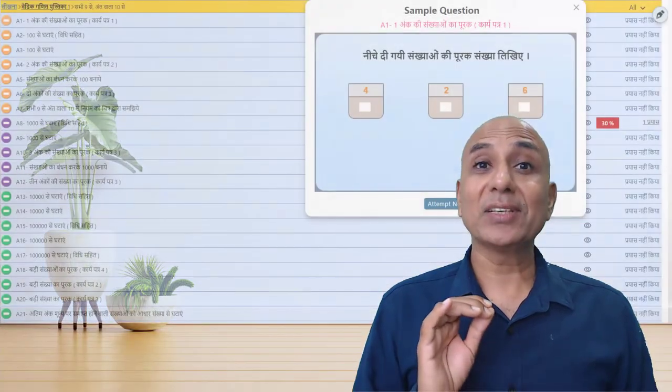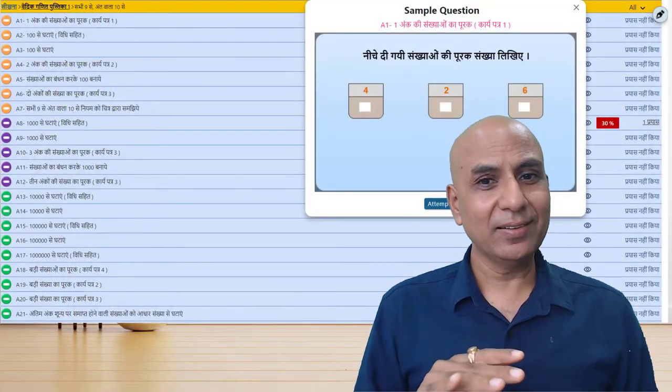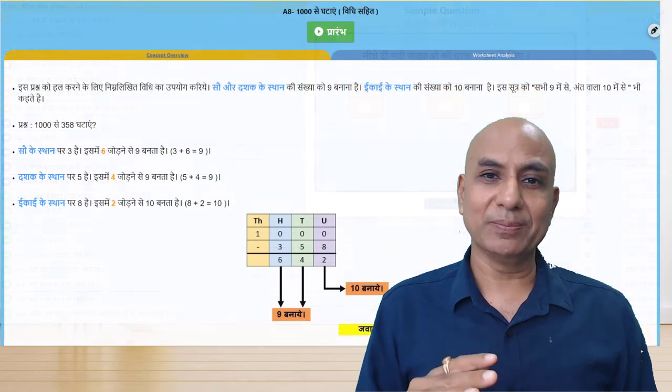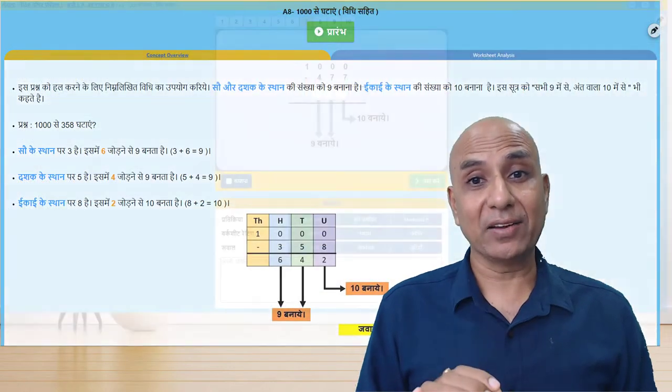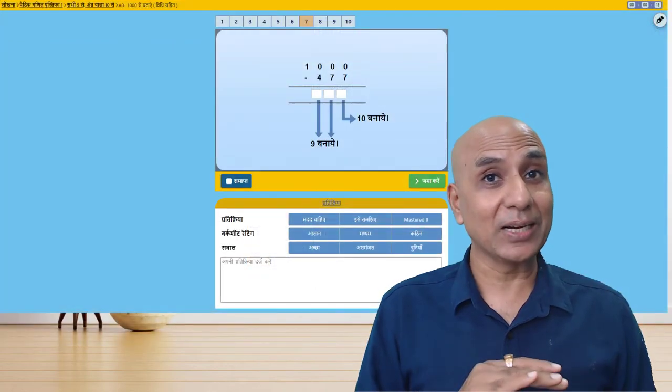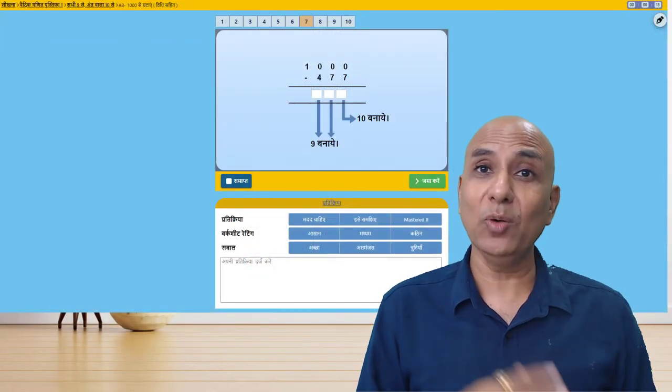Our worksheets come from a language layer and an algorithm layer. Algorithm layer creates it. If we translate the language, our system would be automatically translated into a new language.